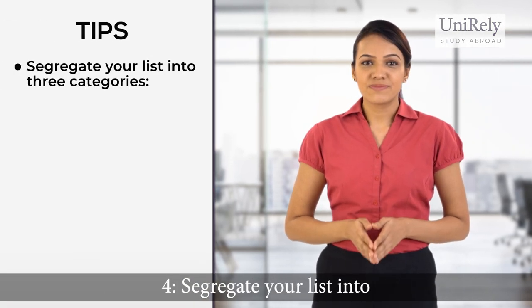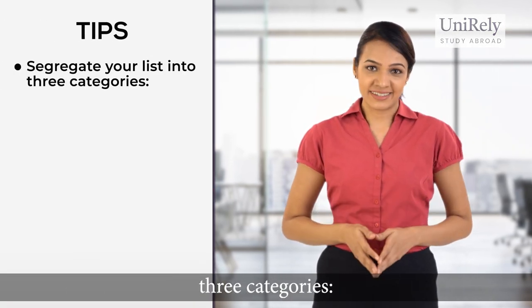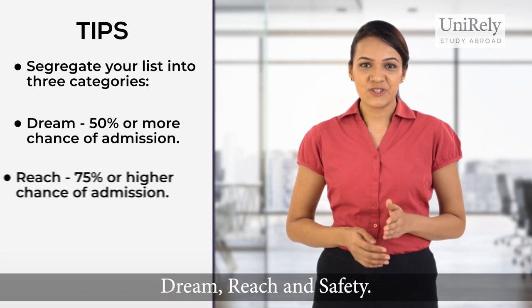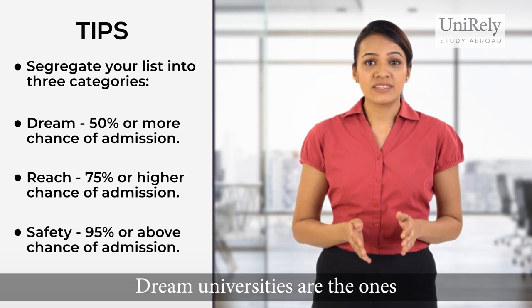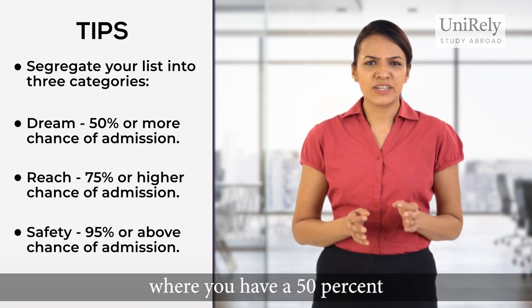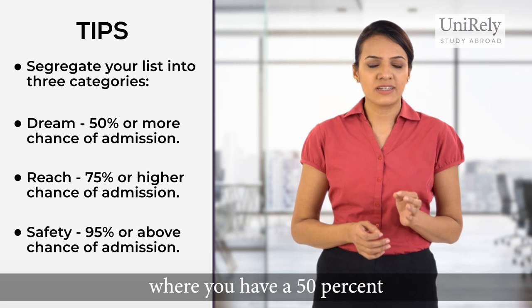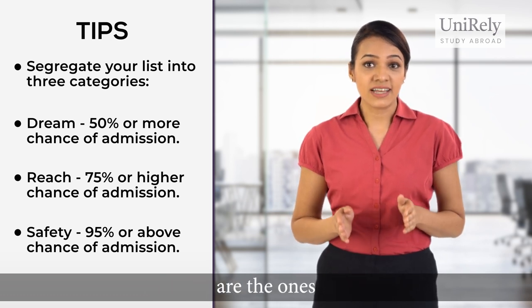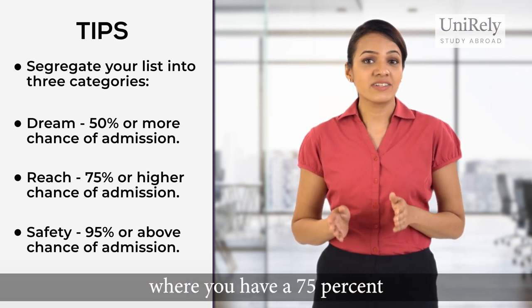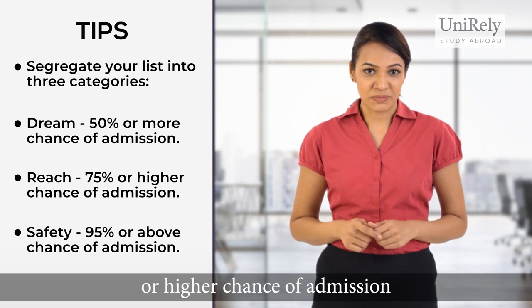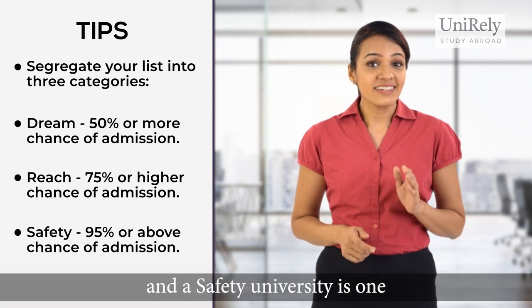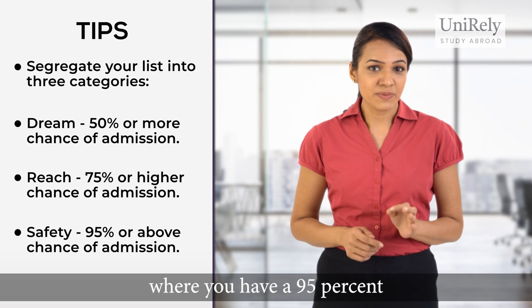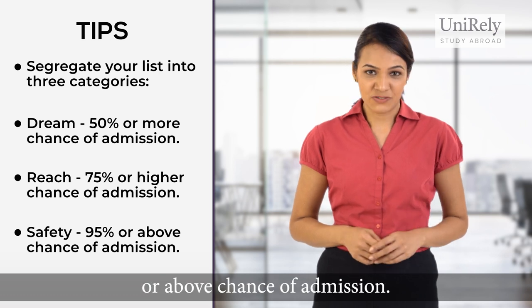Number four, segregate your list into three categories: Dream, Reach, and Safety. Dream universities are the ones where you have a 50% or more chance of admission. Reach universities are the ones where you have a 75% or higher chance of admission. And a safety university is one where you have a 95% or above chance of admission.